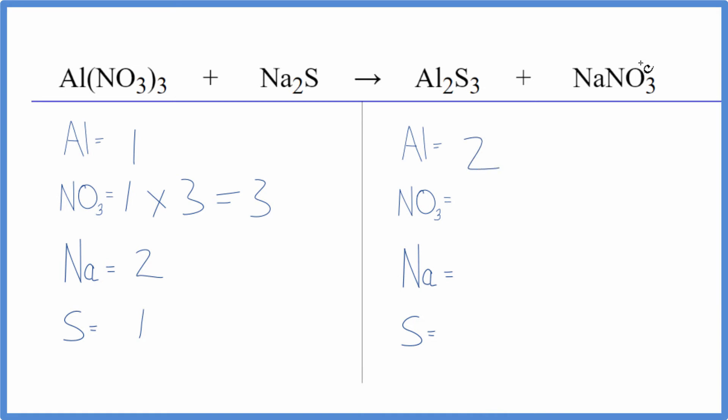Product side, two aluminum, and then just the one nitrate, and then one sodium and three sulfur atoms. So as I look at this here, because I'm just counting this nitrate as one thing, everything's a lot neater.